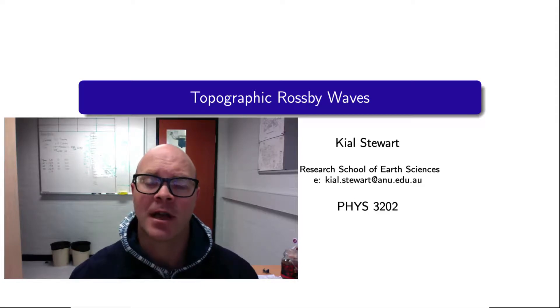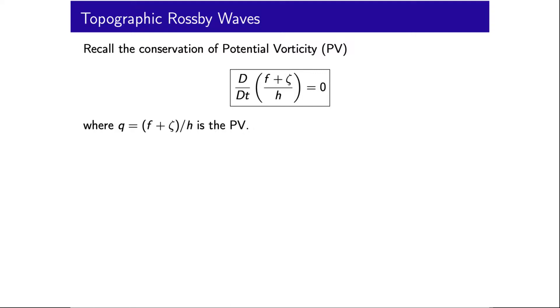A similar phenomenon can arise by considering the gradient of another component of potential vorticity, H, the depth of the fluid. Let's begin with the conserved quantity, the potential vorticity Q, which is equal to the planetary vorticity plus the relative vorticity over the depth of the fluid.